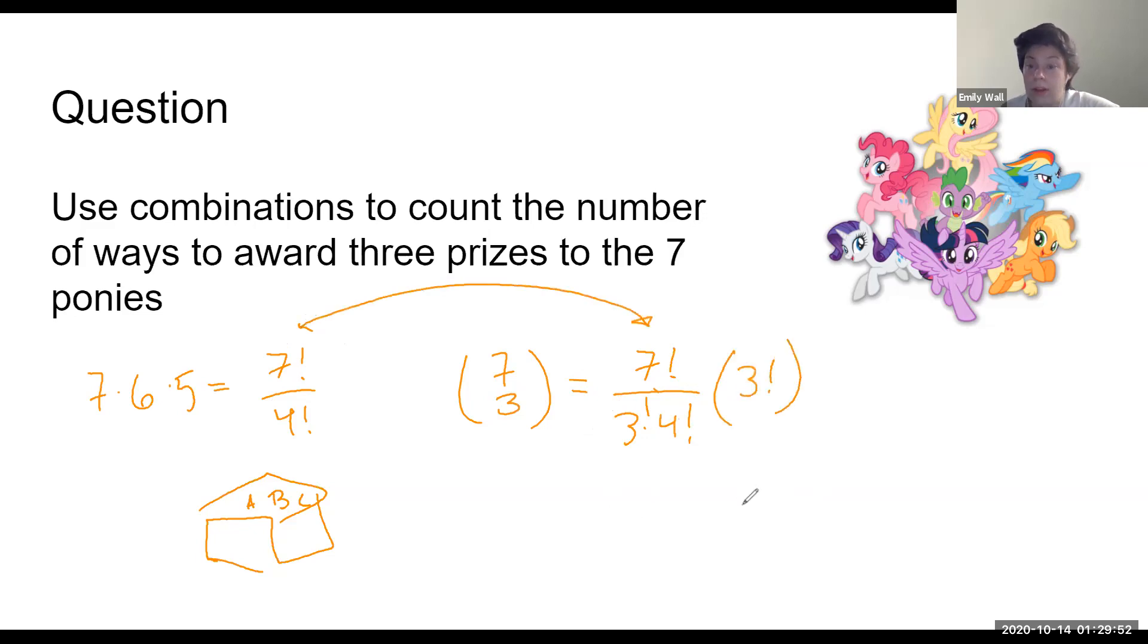So just algebraically, what do we need to do? Well, we need to multiply by three factorial. Why? Well, let's look. Seven choose three counted this box A B and C.